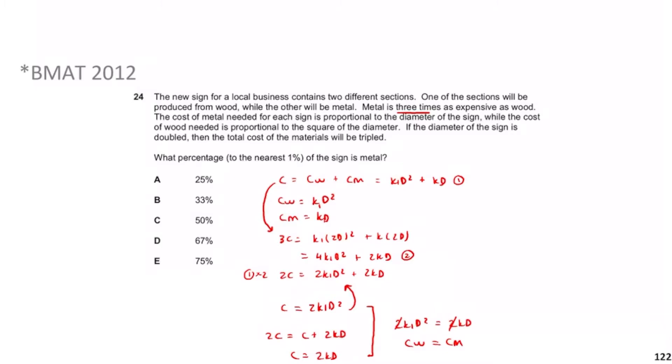The cost of wood equals the cost of metal, but metal is three times as expensive. So in terms of ratios, the amount of metal is 1 and the amount of wood must be 3 (since wood is three times cheaper, you get three times as much for the same cost). Therefore the percentage that is metal is 1 out of 4 total, which is 25%. If I saw this in an exam, I'd probably just guess — it's question 24, meant to be very difficult. Hopefully the explanation made sense.